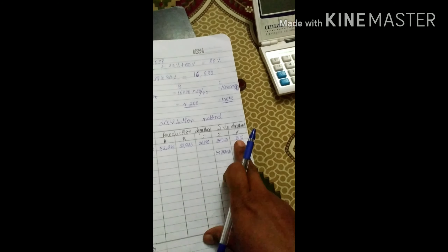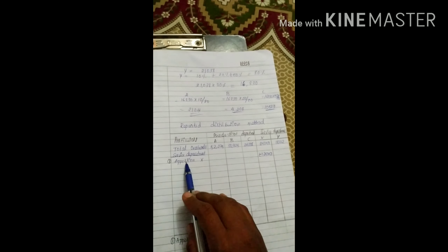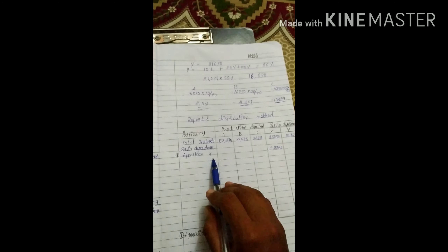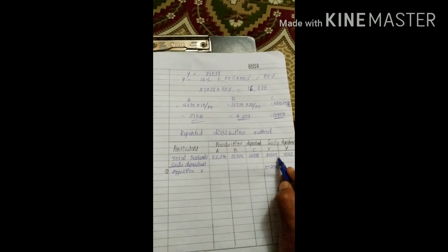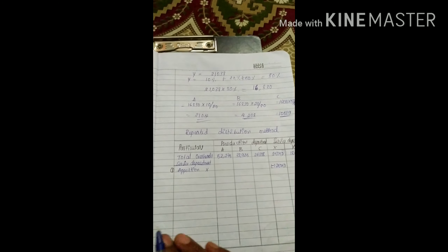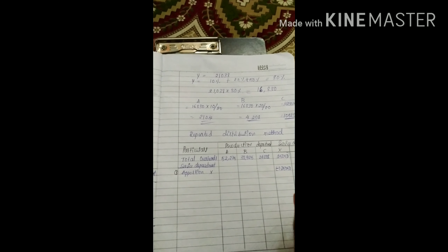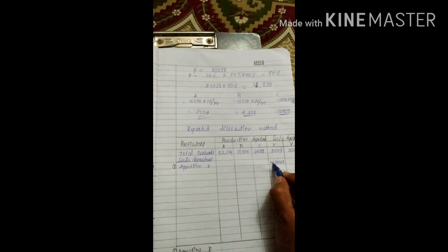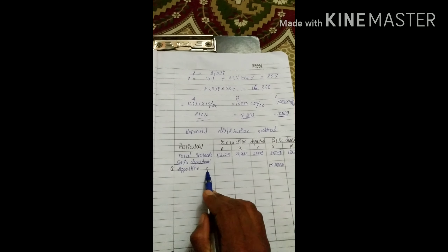Total overheads from the primary distribution summary: 52,275; 38,925; 26,880; 25,050; and 18,100. We need to write down these values and then apportion the service departments. Apportion X, which has a value of 25,050. We assign it as per the rendering service percentages.